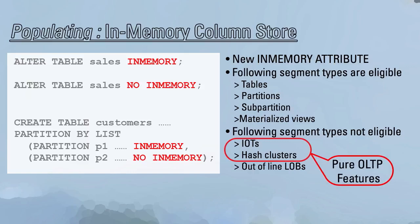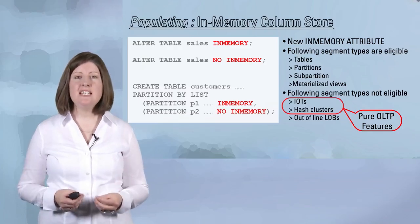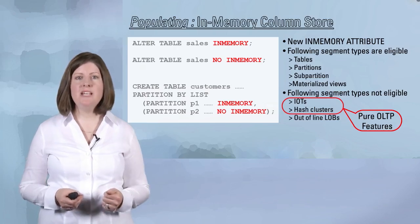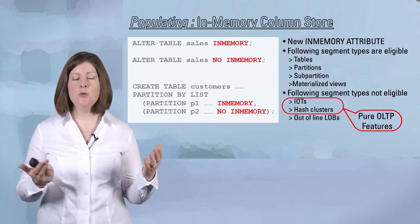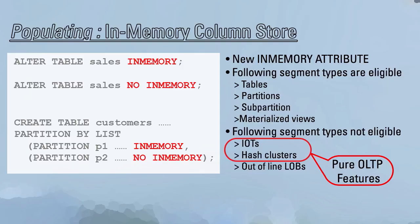Who gets to decide what objects should be populated into the column store? You as the DBA get to decide. You can either specify the new in-memory attribute at a table, partition, sub-partition, or materialized view. That new in-memory attribute can be specified simply by saying ALTER TABLE sales IN MEMORY. If you want to remove an object from the column store, you simply say ALTER TABLE sales NO IN MEMORY.